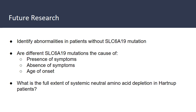Looking to the future of Hartnup disease, further research is necessary to understand and identify abnormalities in patients who present without SLC6A19 gene mutations. Additionally, studying the different SLC6A19 mutations to determine whether they are linked to certain disease factors — such as the presence or absence of symptoms or age of onset — is needed. Finally, it is important to understand the full extent of systemic neutral amino acid depletion in affected patients.